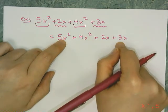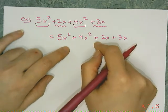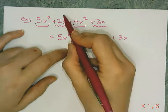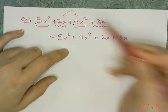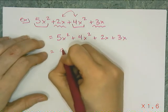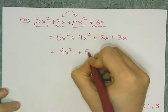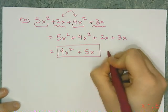Since squares are higher than first powers, then the 5x squared and the 4x squared go together. In essence, what I did property-wise was I used a commutative property and swapped those two terms. So then 5x squareds and 4x squareds combine to 9x squareds. And 2x's and 3x's combine to give me 5x. Box it off. Happy face.